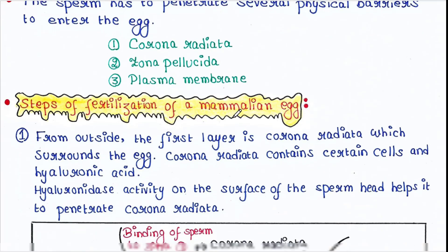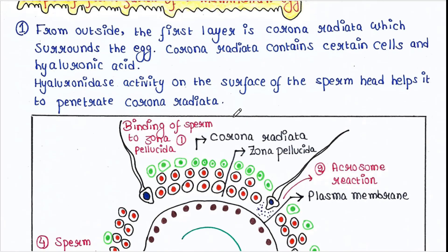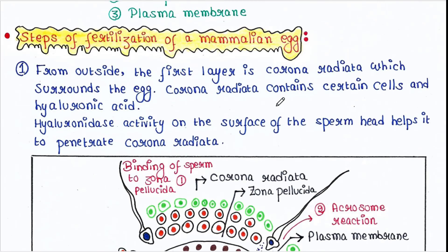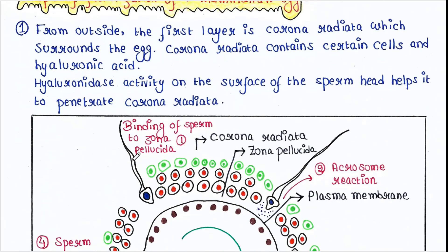Steps of fertilization of a mammalian egg. From outside, the first layer is corona radiata, which surrounds the egg. Corona radiata contains certain cells and hyaluronic acid. Hyaluronidase activity on the surface of the sperm head helps to penetrate the corona radiata. So this is the first step.